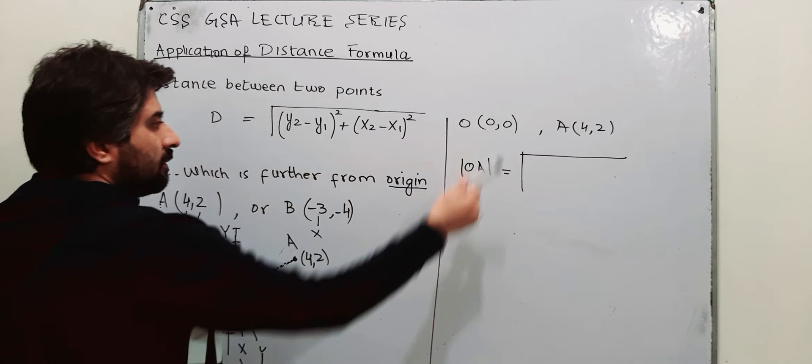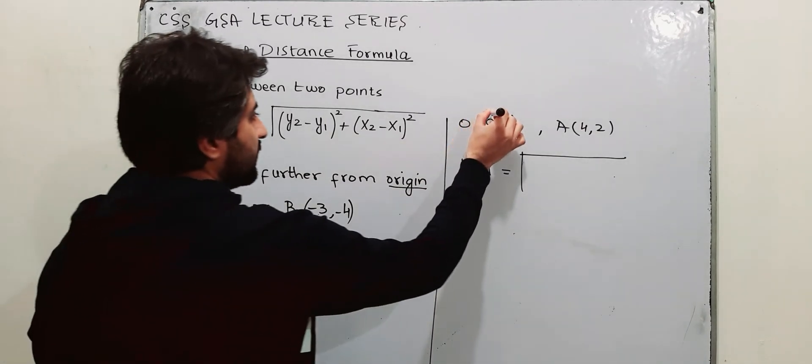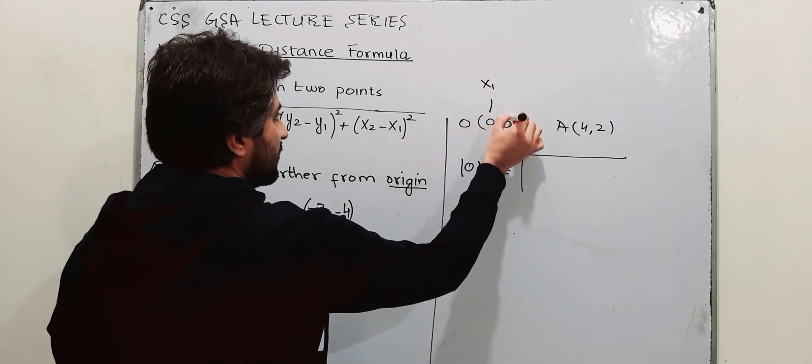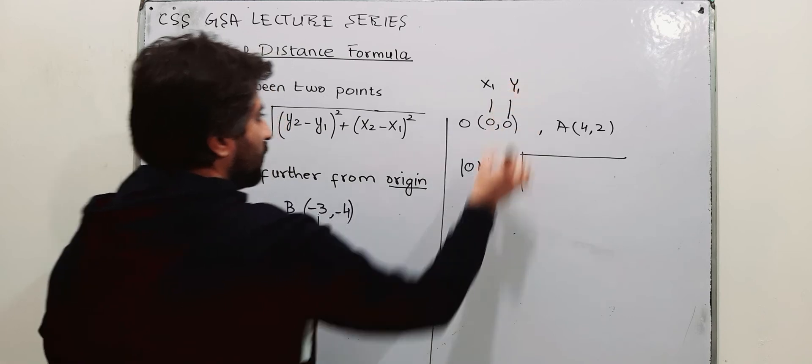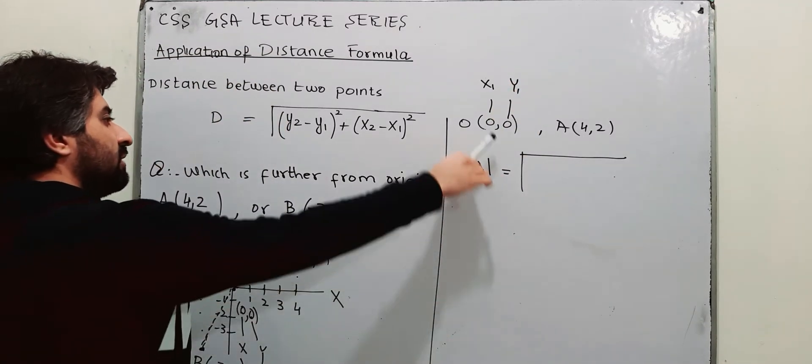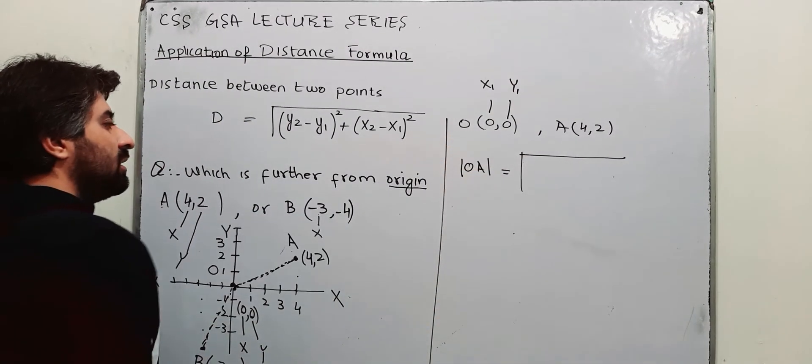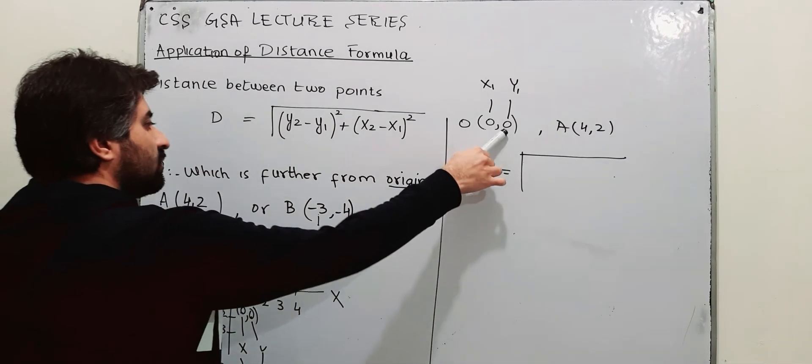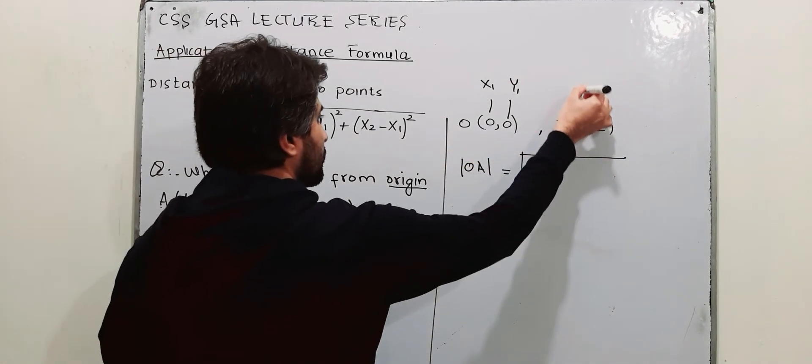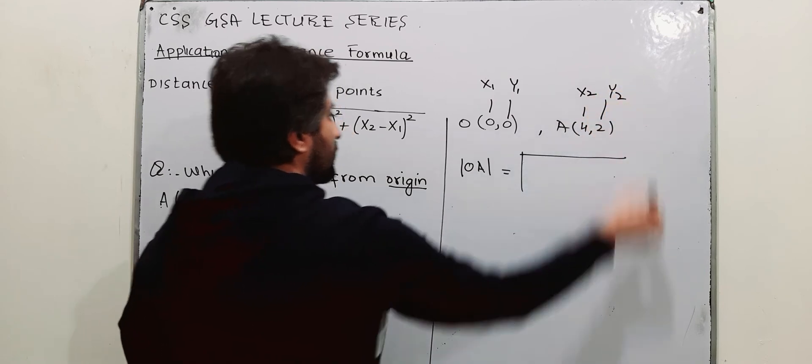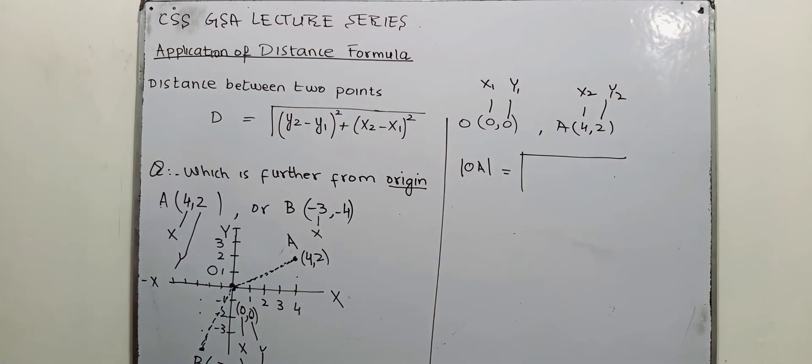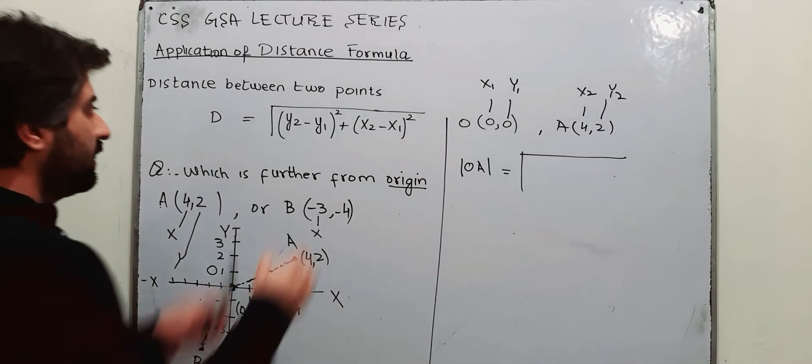So now first of all you must identify. If this is x1, then this is representing y1. The first value is for x, the second value is for y. If this is x1, this is y1, then this one is x2, and this one is y2. Now I am going to apply distance formula over here. So putting the value of x1, y1 in this formula.